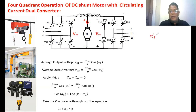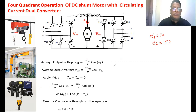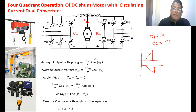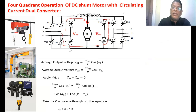For example, if alpha 1 = 30°, then alpha 2 = 180° − 30° = 150°. Converter 1 operates as a rectifier while Converter 2 operates as an inverter. Circulating current flows because, even though the average output voltages of the two converters are equal, there is a difference in their instantaneous voltages. Due to this instantaneous voltage difference, a circulating current flows between the converters. Since the path resistance is very low, this current can be high, so an inductor is used to limit it.